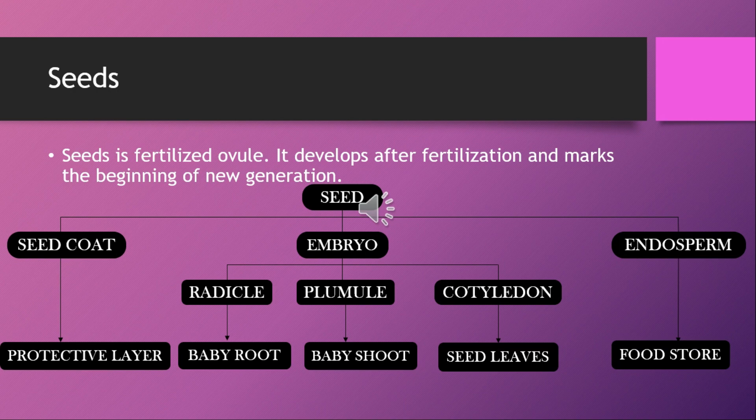The plumule is the young shoot that gives rise to the shoot system. The cotyledon refers to the seed leaves. In some seeds, cotyledons are fleshy and provide food to the growing embryo; in others, cotyledons are papery. The third part of the seed is the endosperm, which is the tissue that stores food and provides it to the young plant.